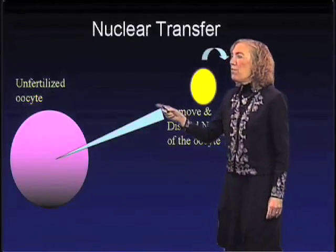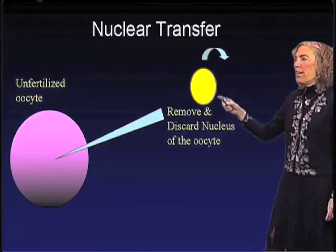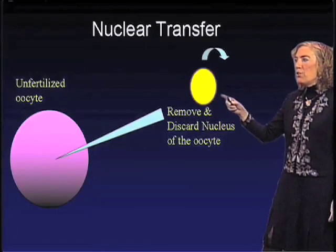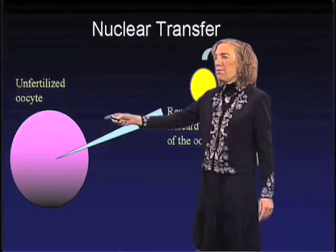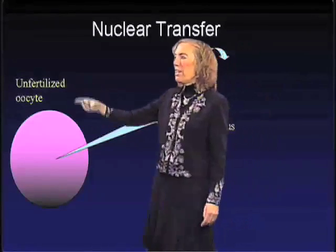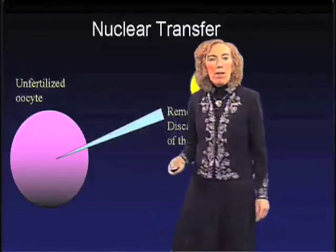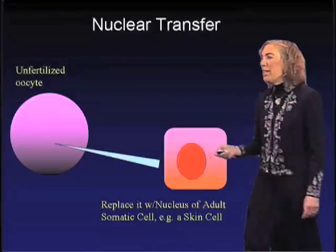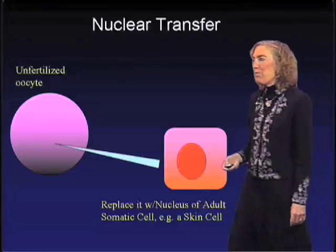We then remove and discard the nucleus of this oocyte. So this is effectively an oocyte now, but it has no genetic information. So now we give it some genetic information.